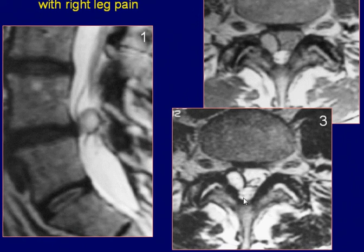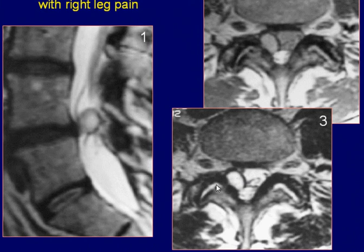Axial proton density and T2-weighted images show the lesion located at the right posterolateral aspect of the spinal canal with close anatomical relationship to the degenerated right facet joint. The lesion is similar in signal intensity to the synovial joint fluid and has a distinct hypo-intense capsule.